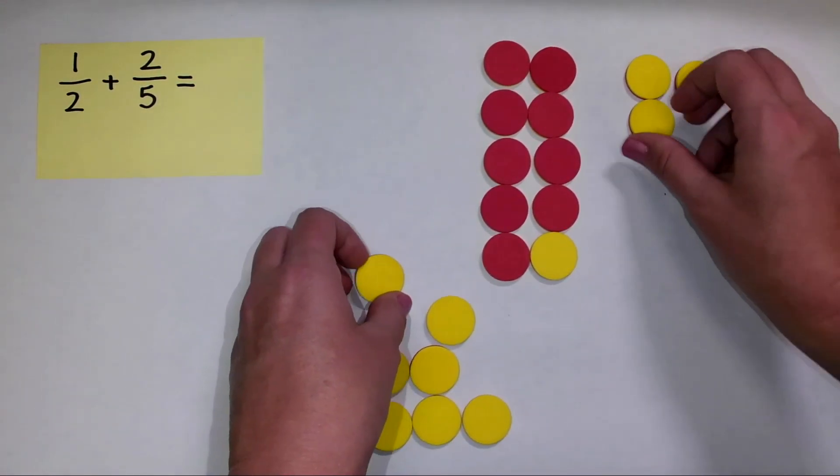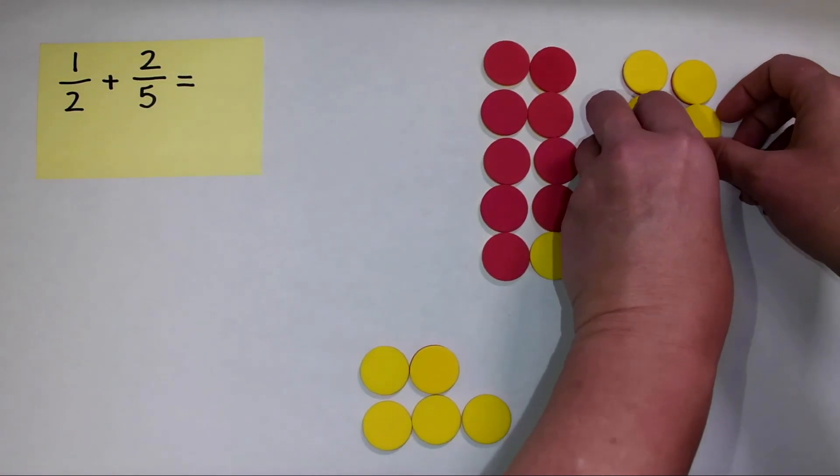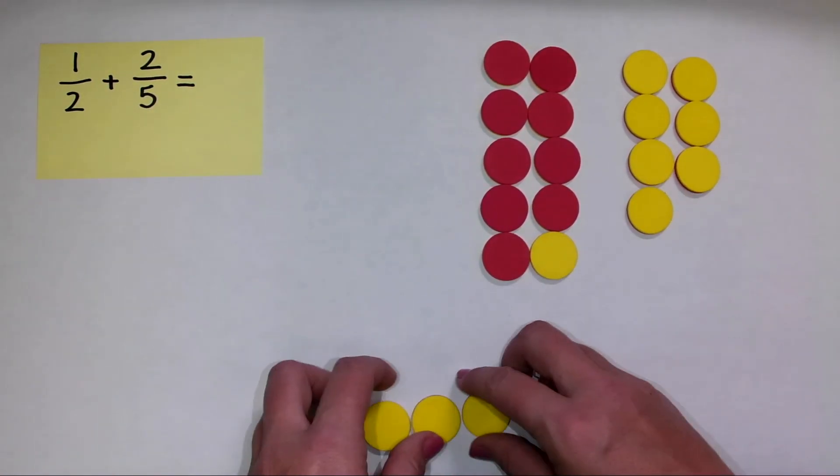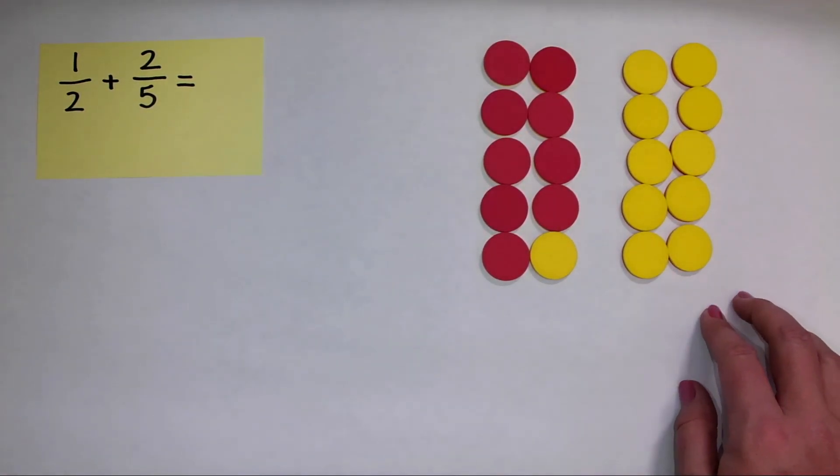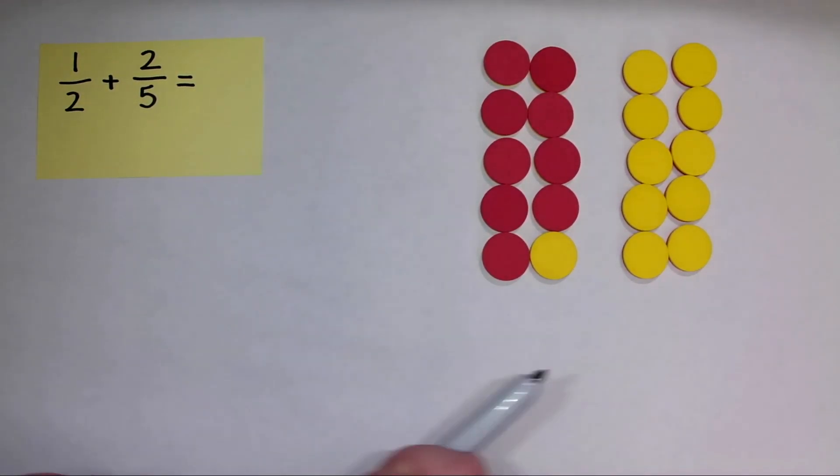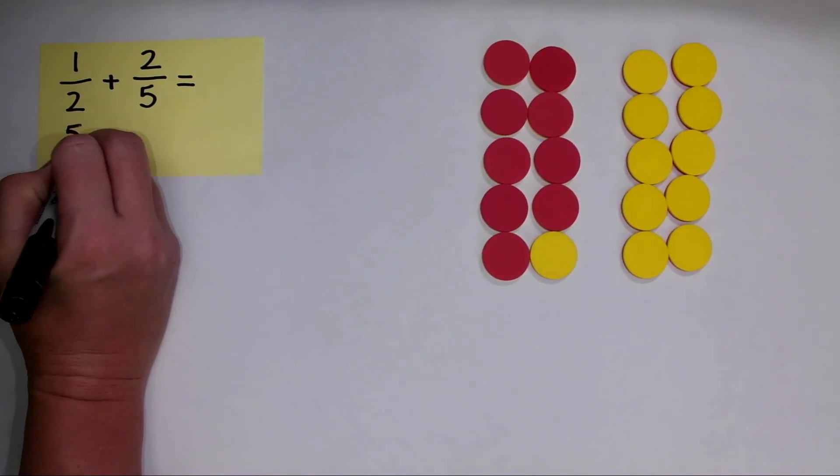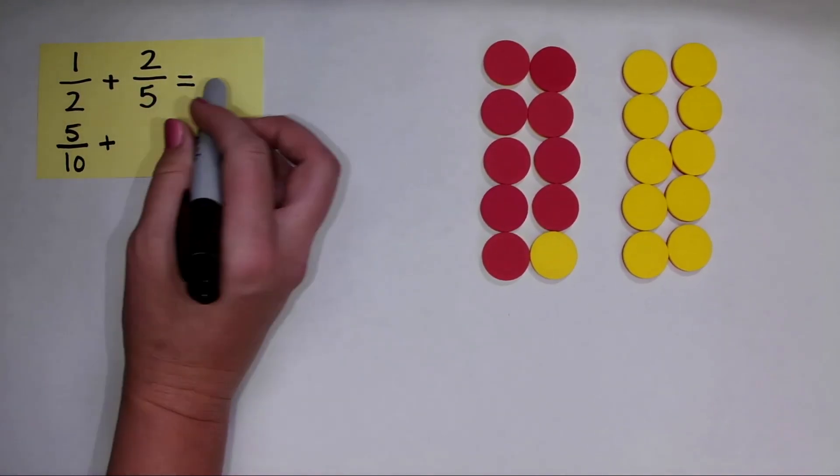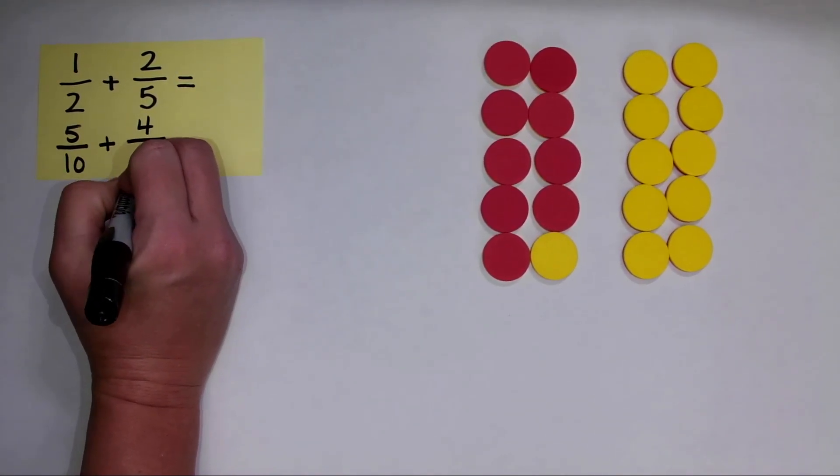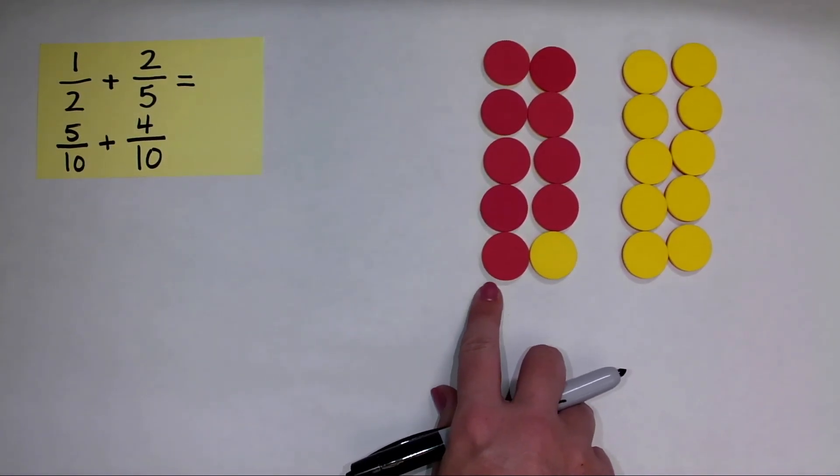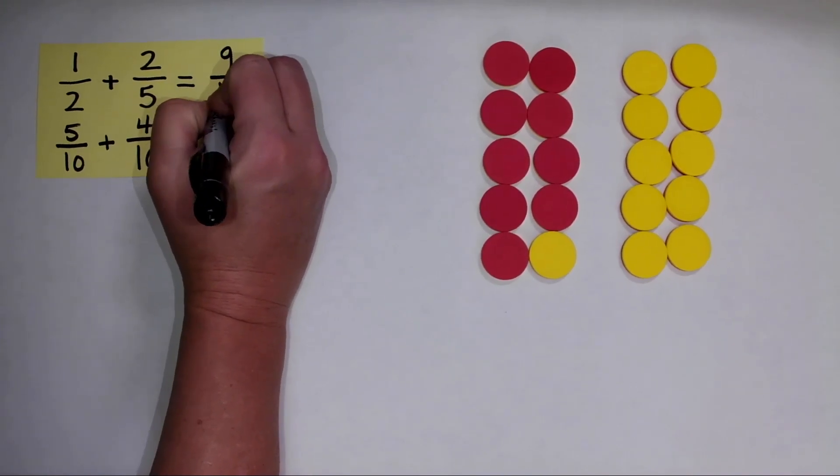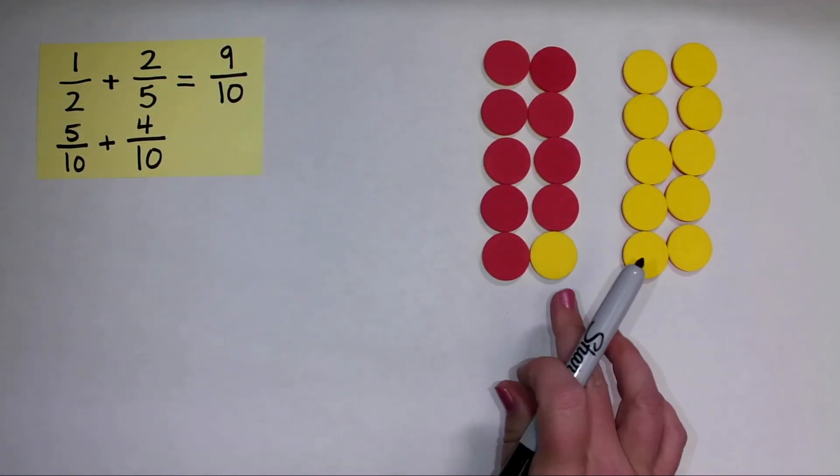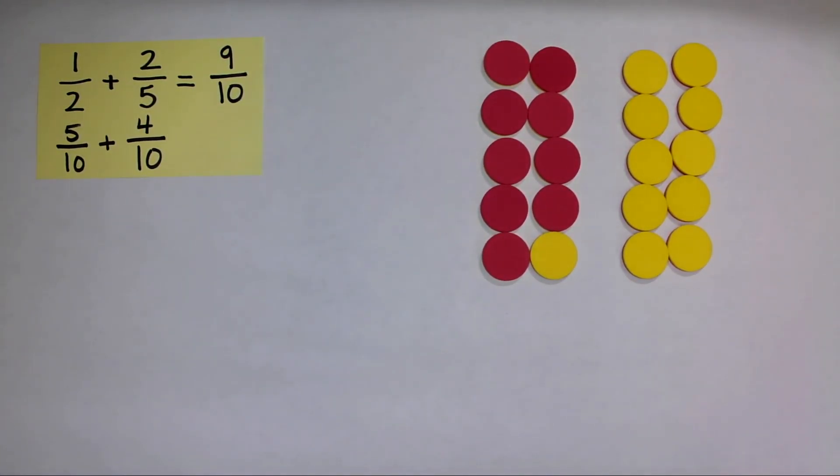I can make another group of ten over here, but remember, these yellow counters are just placeholders. They don't really have any value right now. So I could line them up, but I'm not really concerned with them at this point. So when I have one half, that was equivalent to five tenths, and two fifths was equivalent to four tenths. So one half plus two fifths, the sum is nine tenths. I have nine of the ten counters in this set representing our fraction.